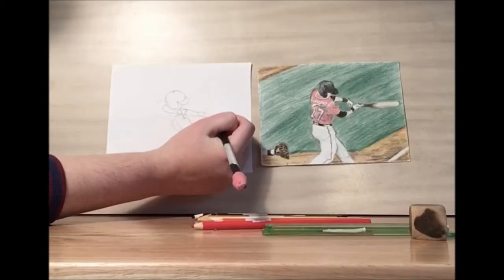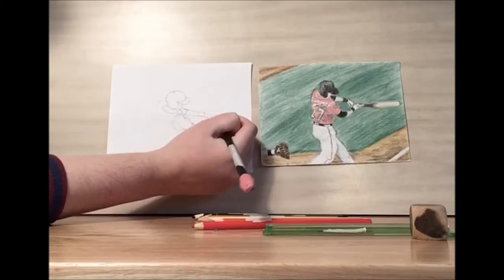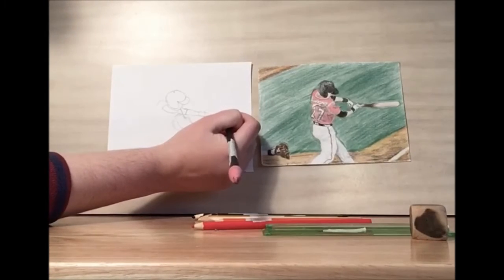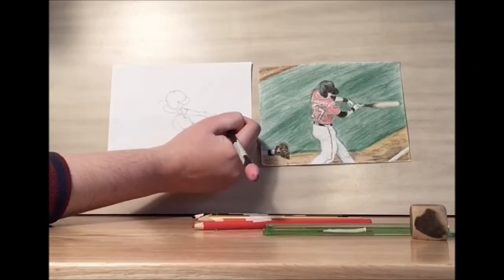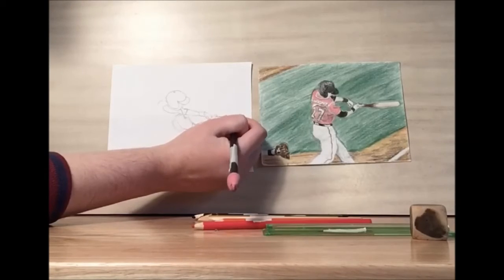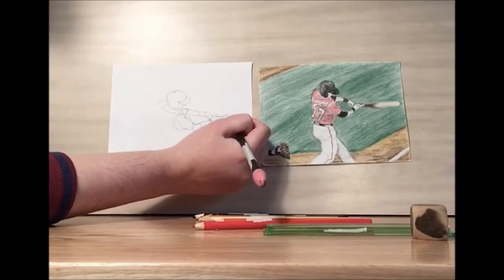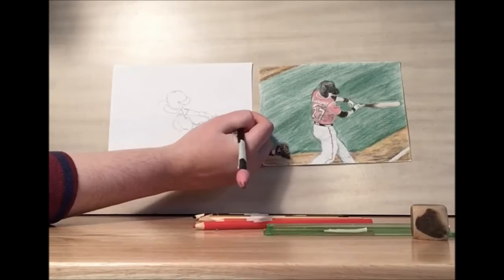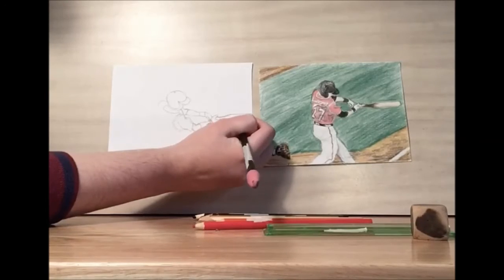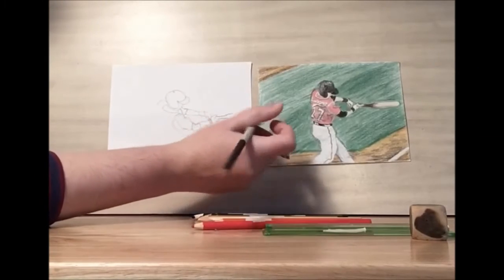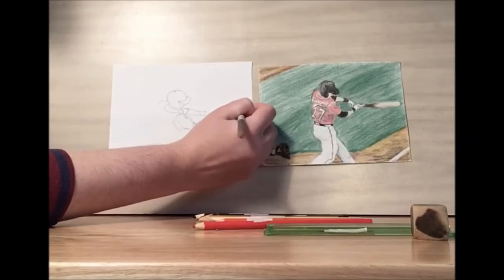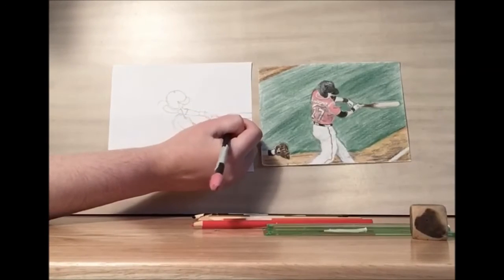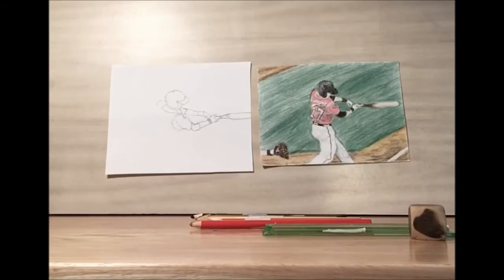You could definitely use that technique here. So what you could do if you're making this for a baseball player in your family, you could take a picture of one of their games, print it out to the size that you want. So if you want like a 5x7 picture or a 4x6 picture, just make sure that the image that you print out is that size. And then you can draw the grid over the picture. Now for this baseball player, his arms are a little longer than in my sample drawing, so the bat is going off the page.